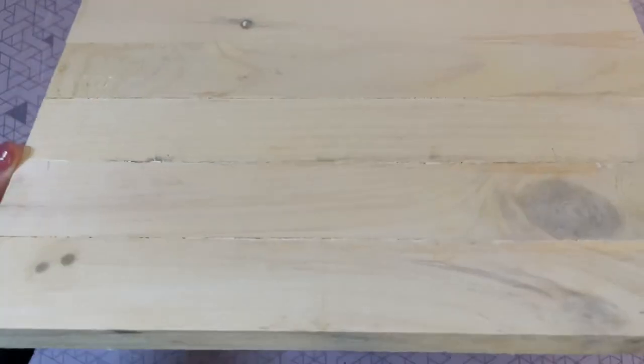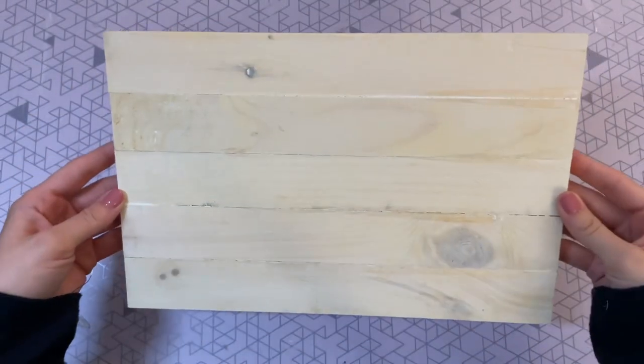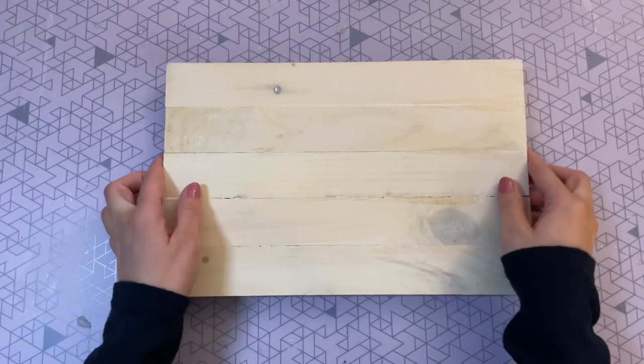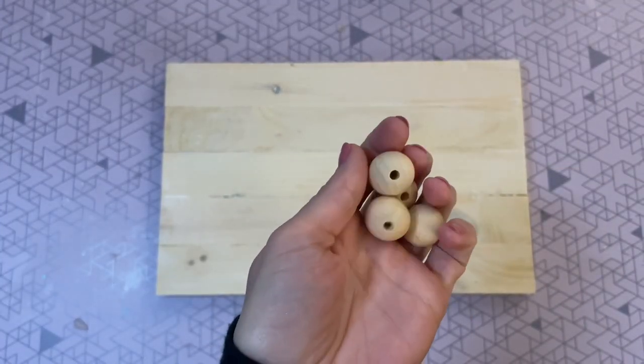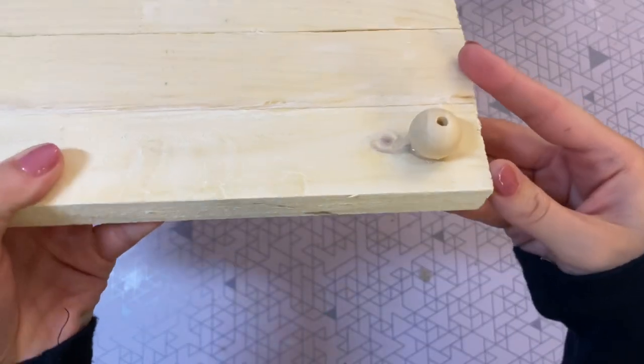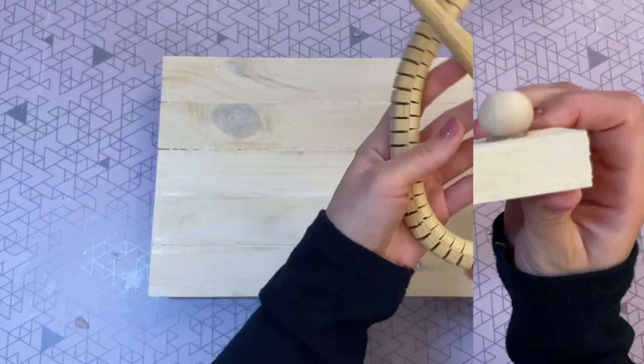This is how my board turned out from that one coat. You can definitely just wait for it to dry and do a second coat if you want it to be a little bit whiter, but this is exactly the look I was going for. Now I just want to add some feet to my tray and I'm just going to be using more of those 20 millimeter wood beads and just hot gluing them to the bottom.